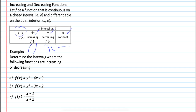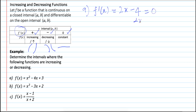Example A: determine the intervals where the following function is increasing or decreasing. f(x) = x² - 4x + 3. First we need to find the critical point. Find the derivative of f, which is equal to 2x - 4. Let it equal 0 and solve for x: 2x = 4, so x = 2. This is the critical point.